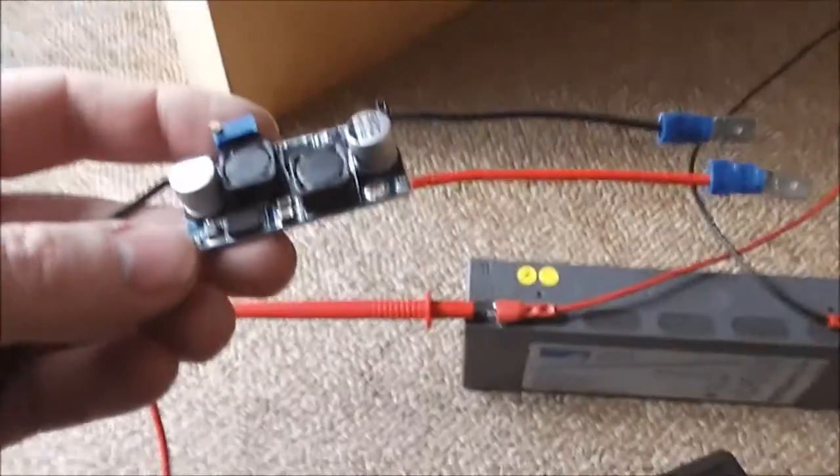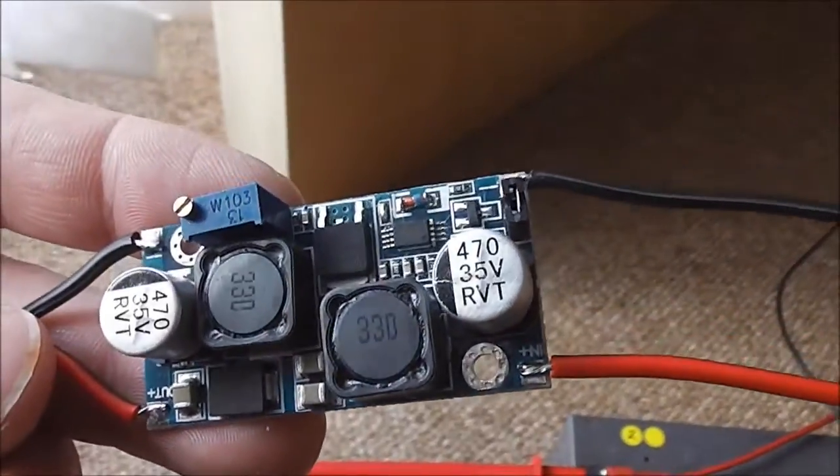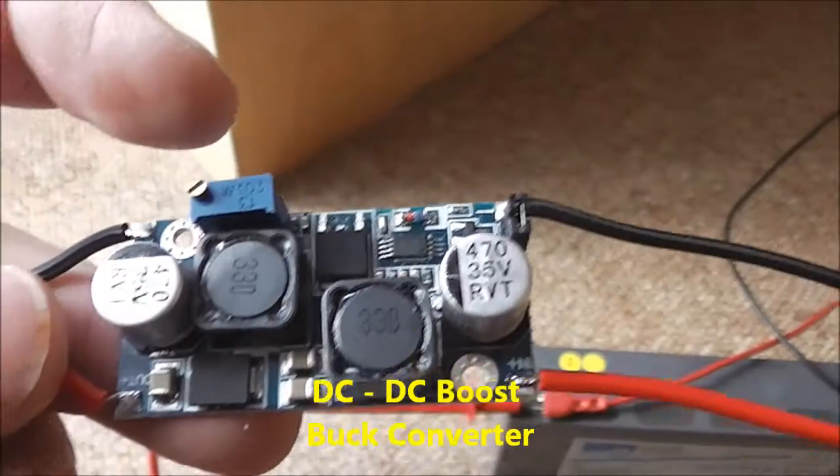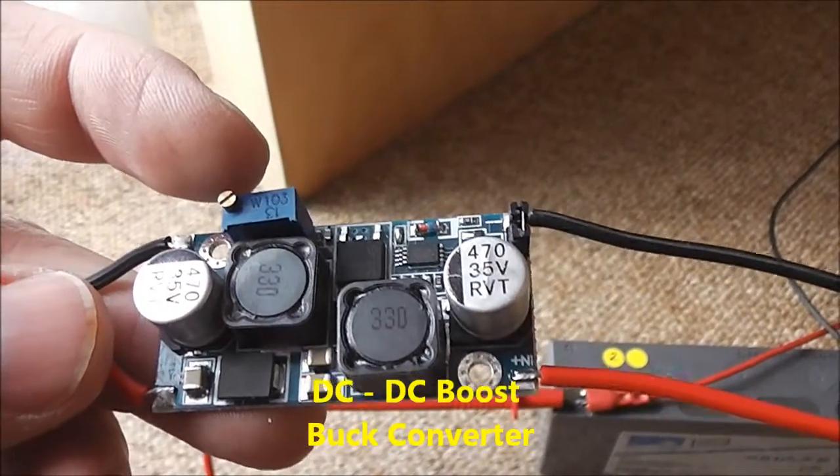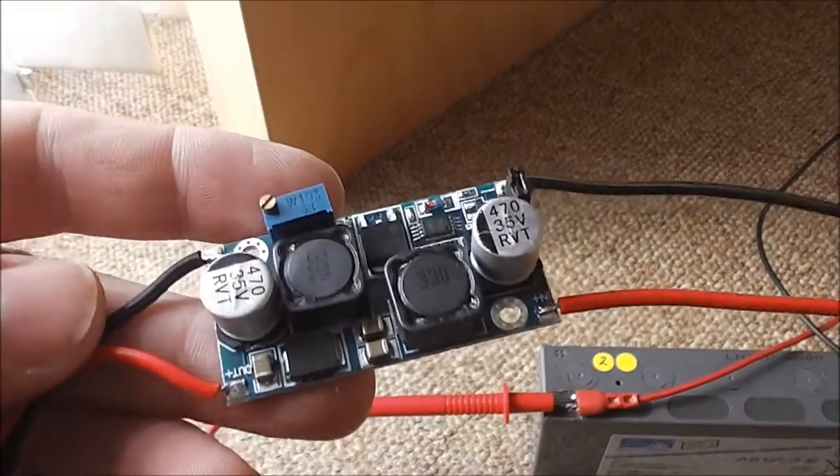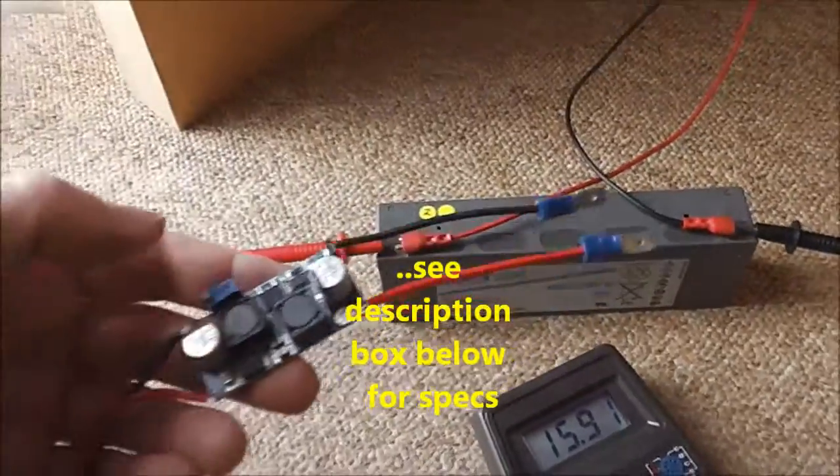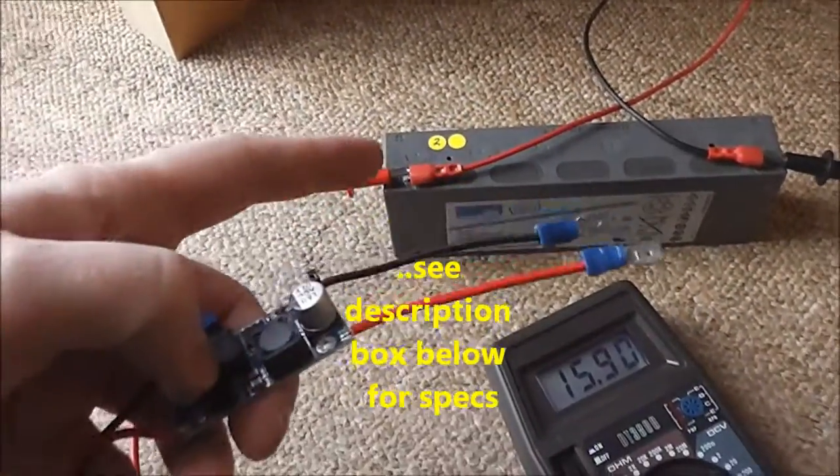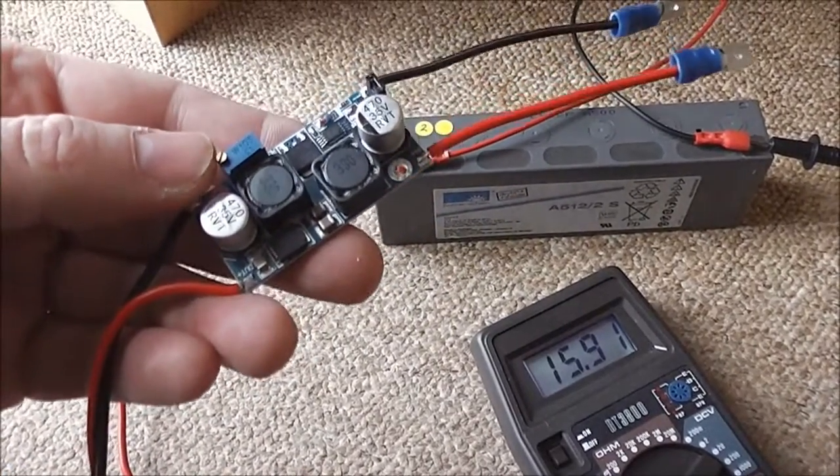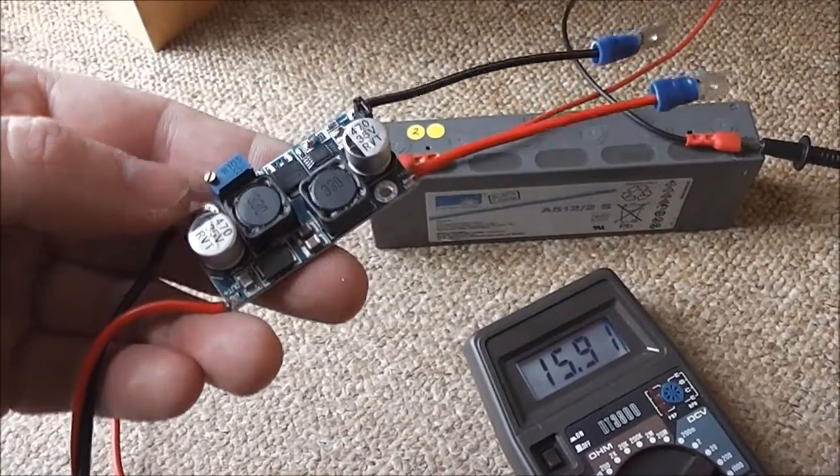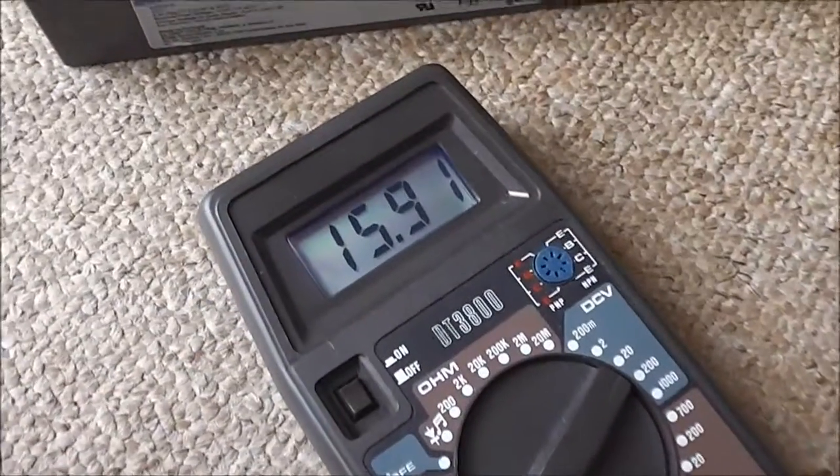So what I found on eBay was one of these little boost-buck converters, and what they've got is a little variable resistor here to reduce or increase the voltage that you can charge things at. What I'm going to do is solder on these leads, put it in line with the charger between the charger and the battery, and then I can reduce the voltage coming out of the end and hopefully get a constant voltage rather than the 16V that's coming out of it now.